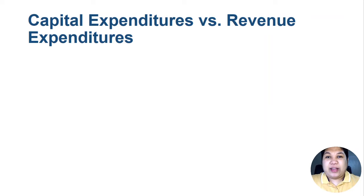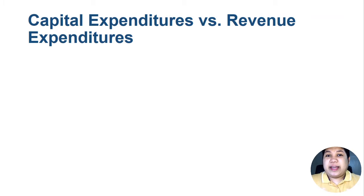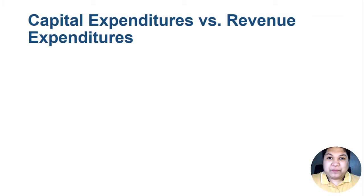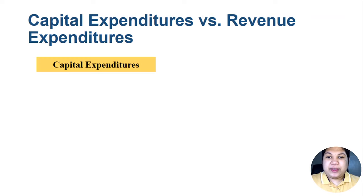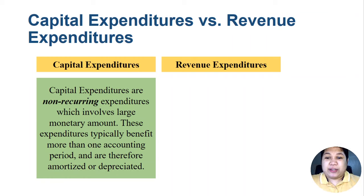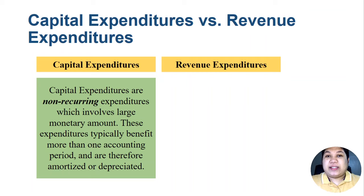In a particular business setting there are a lot of transactions which usually involve expenditures or disbursements — using business cash or money to acquire something. Capital expenditures are non-recurring expenditures which involve large monetary amounts. This expenditure typically benefits more than one accounting period and is therefore amortized or depreciated.